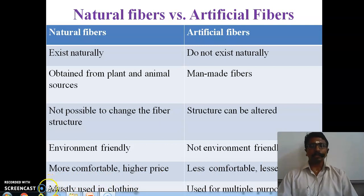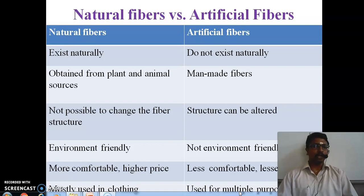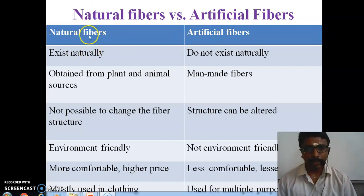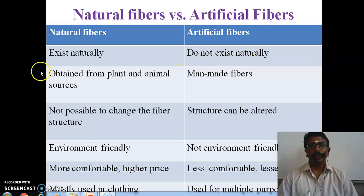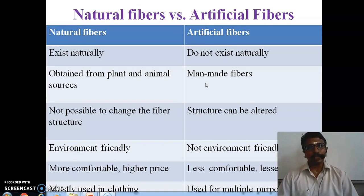Natural fibers are mostly used only for clothing purposes. But artificial fibers are used for various multiple purposes — they can be used as clothing and also as thread, and in many other applications. Natural fibers exist naturally and are obtained from plants and animal sources, whereas artificial fibers are man-made or synthetic fibers.